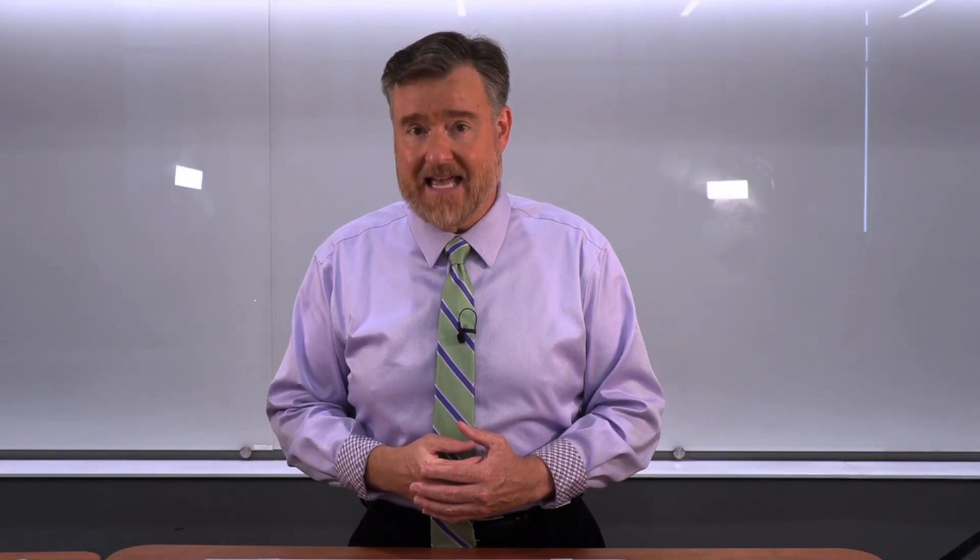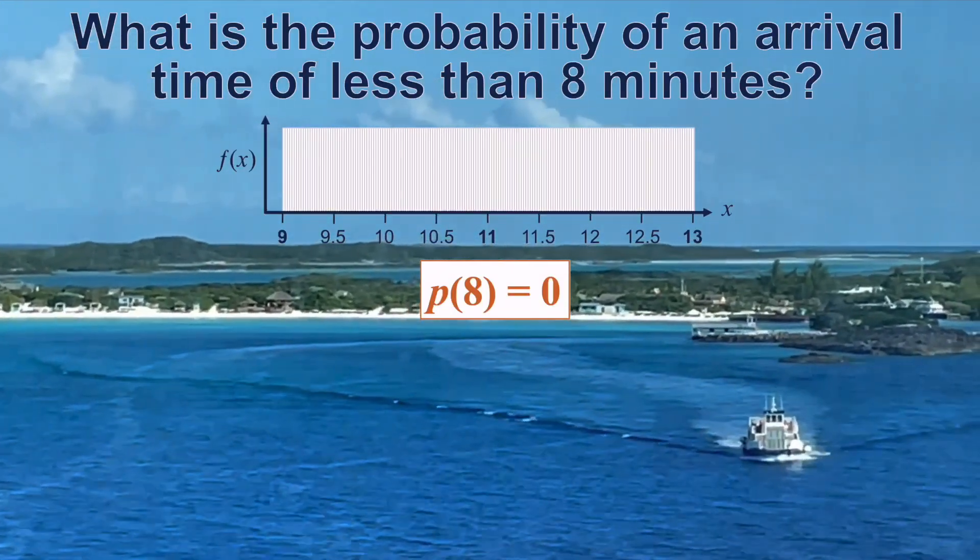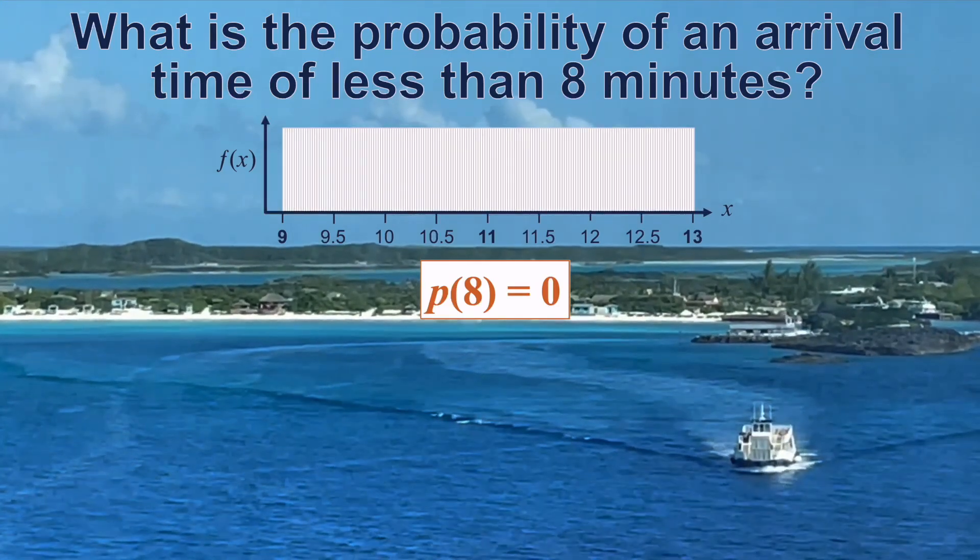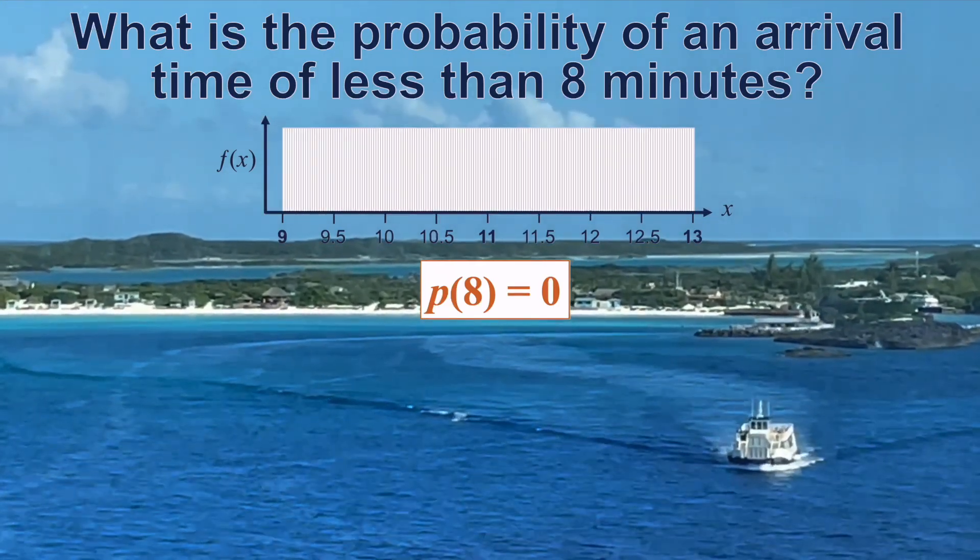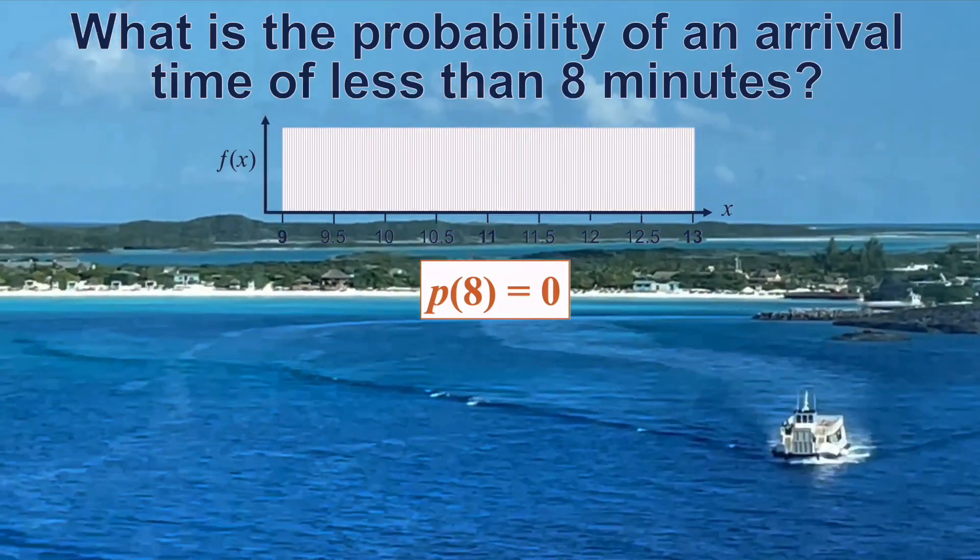How about this? What is the probability of an arrival less than eight minutes? We look at our distribution, and the minimum score is nine. Therefore, the probability of an arrival less than nine minutes, or greater than 13 minutes, is zero.